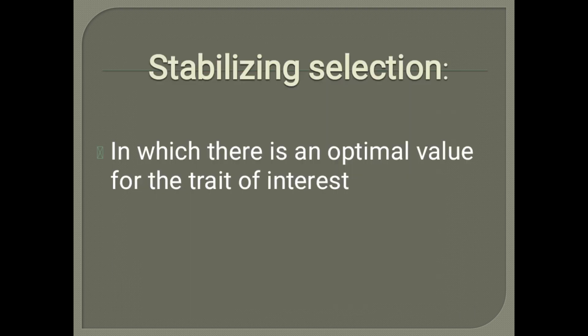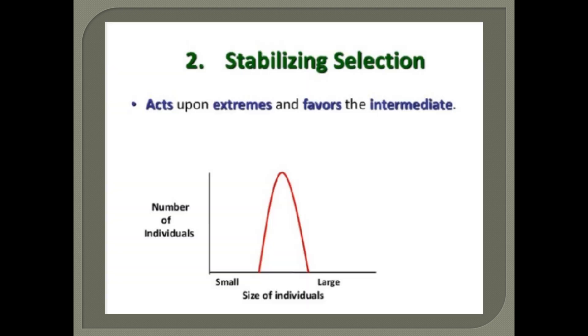Number two: stabilizing selection. Stabilizing means stable — in which there is an optimal value for the trait of interest. مطلب وہ individual جو optimal، normal، اور stable ہے — نہ بہت زیادہ نہ بہت کم — nature اسے select کرے گی۔ For example، ایک individual کا weight بہت زیادہ ہے، دوسرے کا بہت کم — دونوں fit نہیں ہیں۔ Nature ان کو select کرے گی جن کا weight normal اور stable ہے۔ Graph میں: small اور large والے دونوں کو nature select نہیں کرے گی، صرف medium کو select کرے گی۔